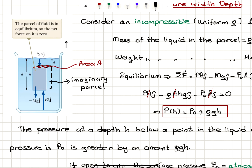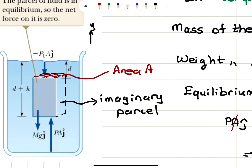We have a force of minus P₀A ĵ applied on the top surface of this imaginary parcel, and a force of PA ĵ applied from the bottom. The parcel has a weight mg pointing downward, so minus mg ĵ. The parcel is taken a distance d from the top surface of the liquid, and the total height of the parcel is h. So the bottom surface is at depth d plus h with respect to the top, and the perpendicular area is A.